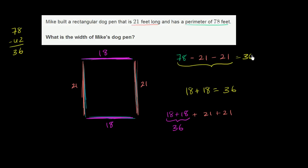And you are left with 36, which is exactly what we got here. This is what we needed the two widths to add up to. Plus 42, which is of course equal to 36 plus 42 is equal to 78, which is the perimeter.